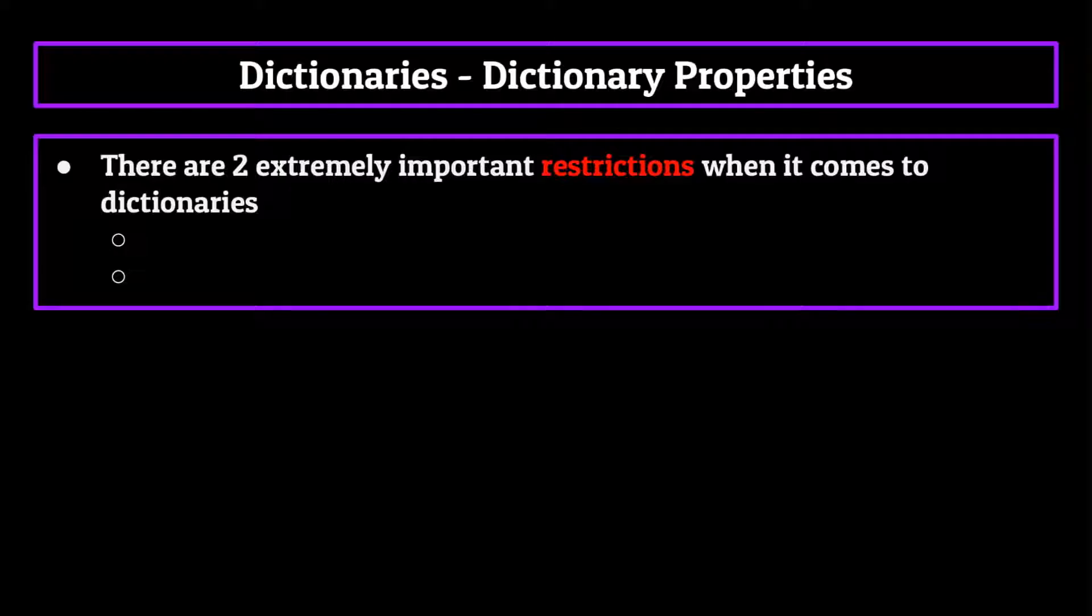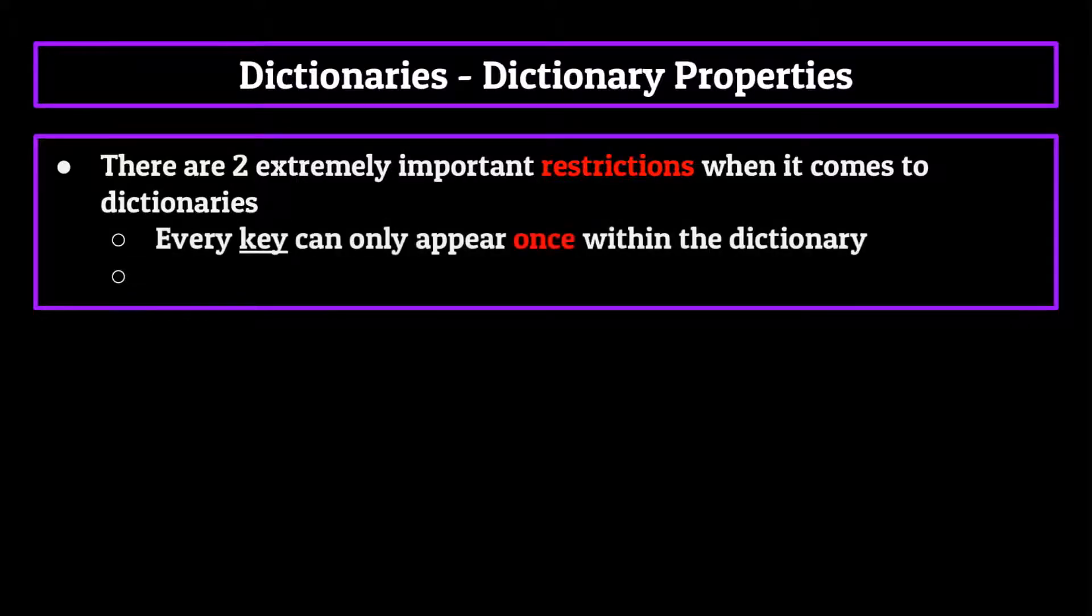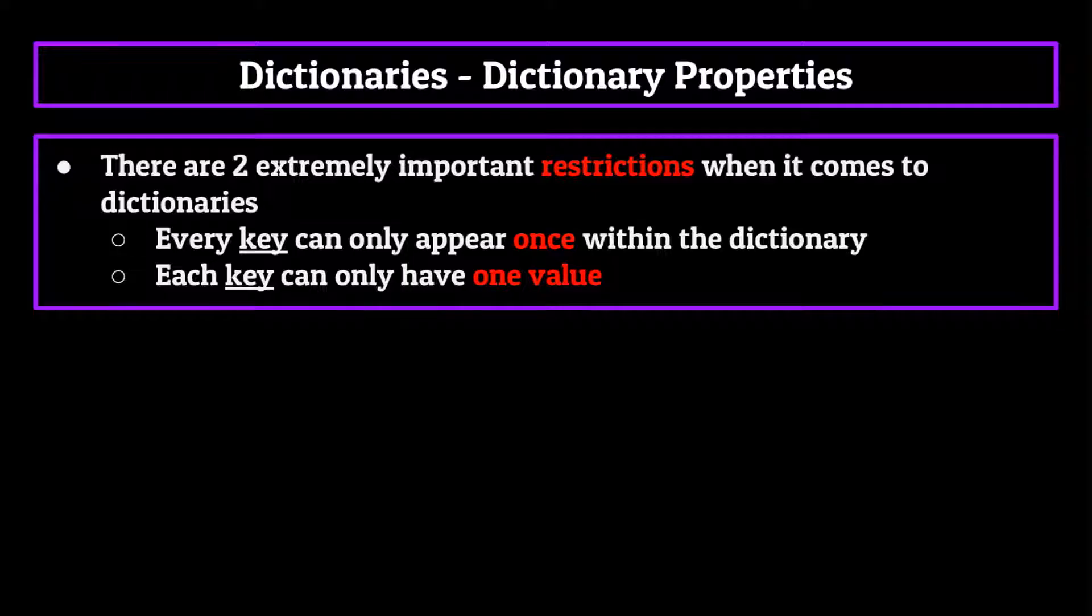Now as amazing as they are though, there are two extremely important restrictions that we have to cover when it comes to dictionaries, and they are as follows. Every key can only appear once within the dictionary, and each key can only have one value.